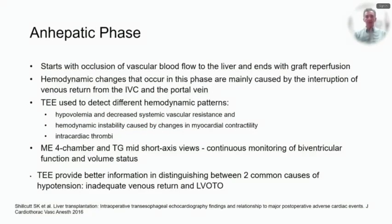The anhepatic phase starts with the occlusion of vascular blood flow to the liver and ends with graft reperfusion. Hemodynamic changes are mainly caused by partial or complete clamping of the IVC and portal vein. TEE is used to detect decreased systemic vascular resistance and hypovolemia, hemodynamic instability caused by changes in myocardial contractility, right or biventricular dysfunction, and intracardiac clots. The mid-esophageal four-chamber and transgastric mid-short-axis views are ideal for distinguishing between these patterns, allowing continuous monitoring of biventricular function and volume status. TEE images during the anhepatic stage were reported to provide better information differentiating between two common causes of hypotension: inadequate venous return and LVOT obstruction.